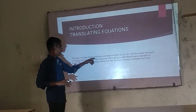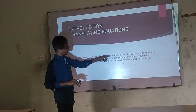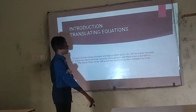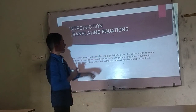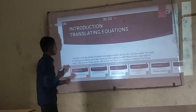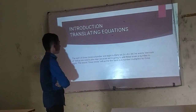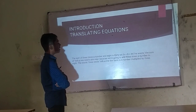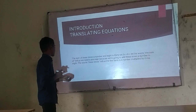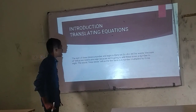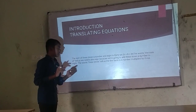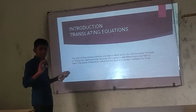The sum of 3 times a number and 8 is 66. The word 'sum' tells us we need a plus sign, because we are going to add 3 times a number to 8. The word '3 times' tells us the first term is a number multiplied by 3.